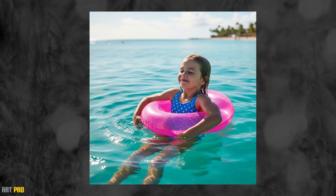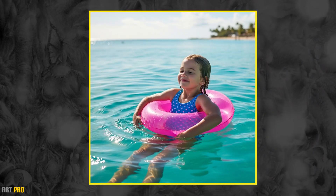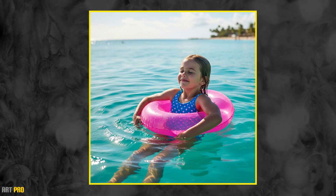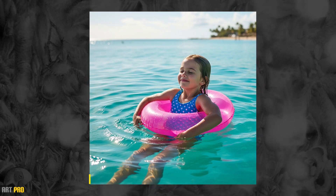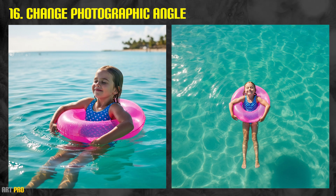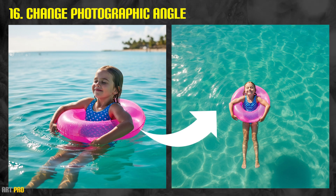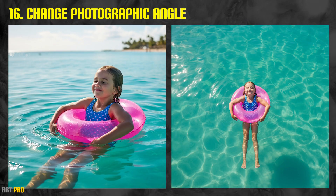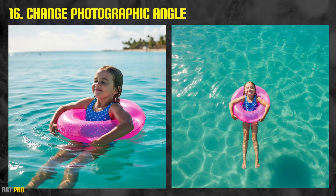We continue with a feature that I love, and we're going to try it with this photograph of a girl in the sea with a pink float — we can change the photographic angle. I asked for the photograph to be taken from above, and the main character maintains the same posture, with the same elements and same lighting, but seen from a different perspective.